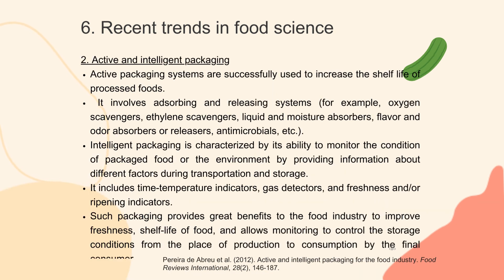The second trend is active and intelligent packaging. Active packaging systems are successfully used to increase the shelf life of processed foods through adsorbing and releasing systems. Intelligent packaging is characterized by its ability to monitor the condition of packaged food or the environment, providing information during transportation and storage. It includes time-temperature indicators, gas detectors, and freshness or ripening indicators. Such packaging benefits the food industry by improving freshness and shelf life, and allows monitoring of storage conditions from production to the final consumer.